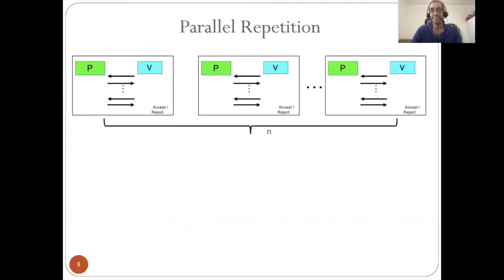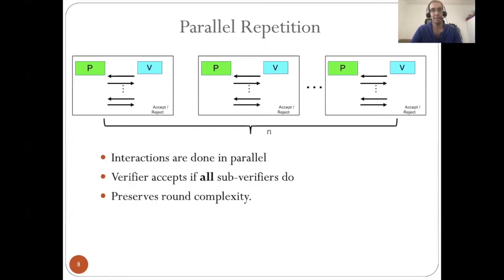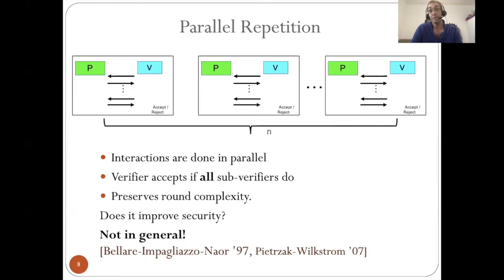An alternative is parallel repetition, where in each interaction round, each party sends N messages corresponding to the N executions, and the verifier accepts if all sub-verifiers do, thus preserving round complexity. But does it improve security? It turns out, very surprisingly, not in general. There are concrete examples of arguments with soundness error one-half where you repeat them a million times in parallel and the soundness error remains one-half.